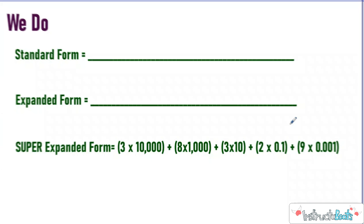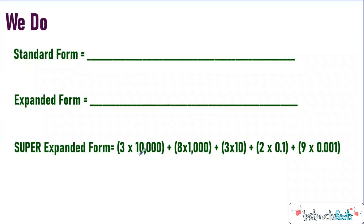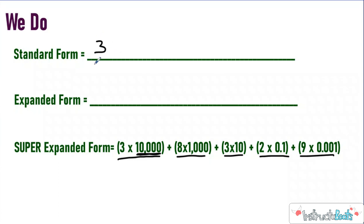Let's do this we-do together. I gave you the super expanded form, and we're going to have a number that has five digits. For super expanded form, we know that the three should be in the ten-thousands place, because that's the position we're multiplying the factor by. So I'm going to put a three in the ten-thousands place — that's going to be my biggest digit because that's the biggest factor I'm multiplying by. Then I had an eight in the thousands place, so the eight would be next to the ten-thousands place.